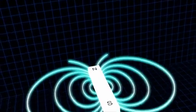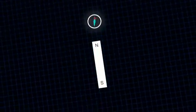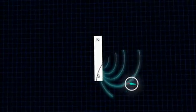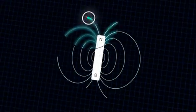If you take the filings away, you can still get an idea of what the field looks like by flying a tiny compass around the magnet. The compass points in the direction of the magnetic field, allowing you to draw its shape.